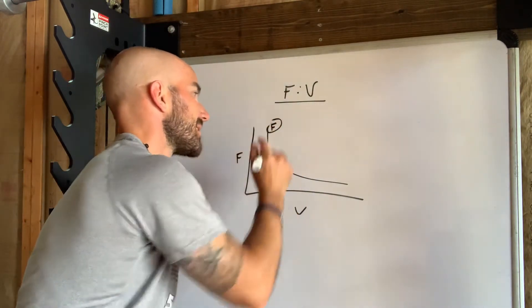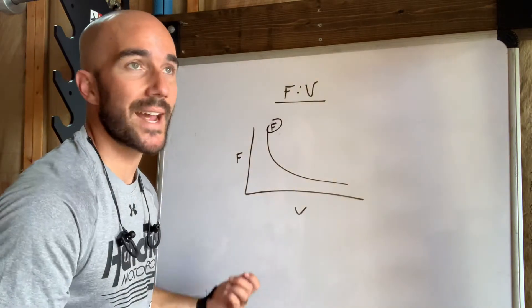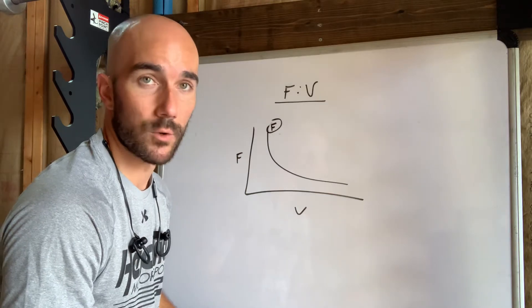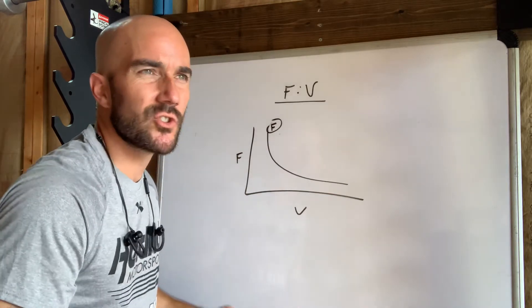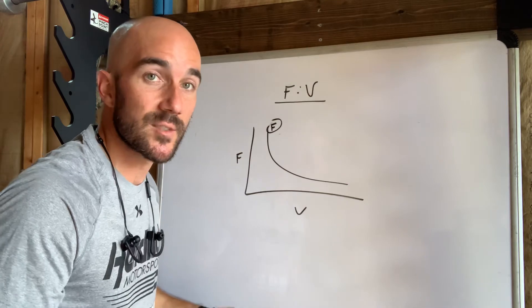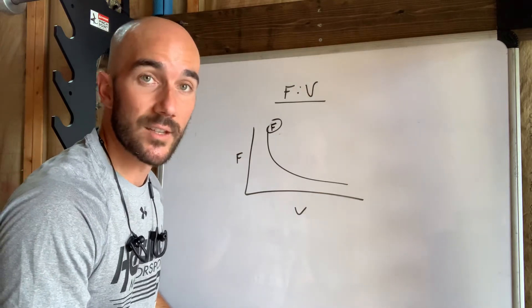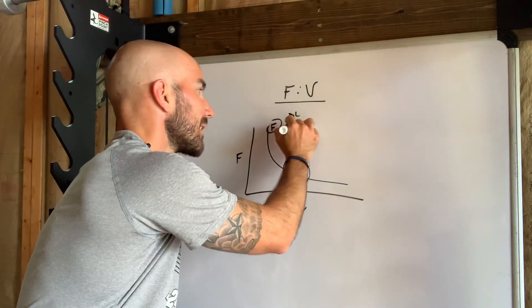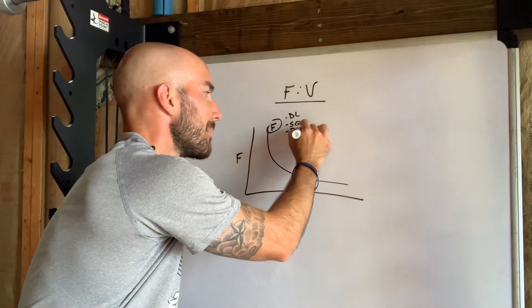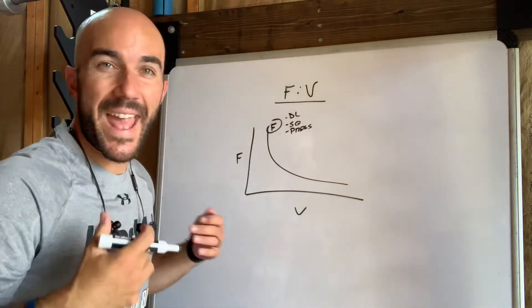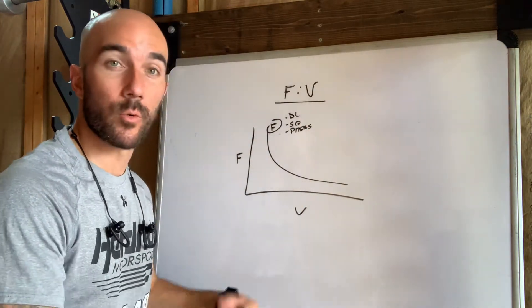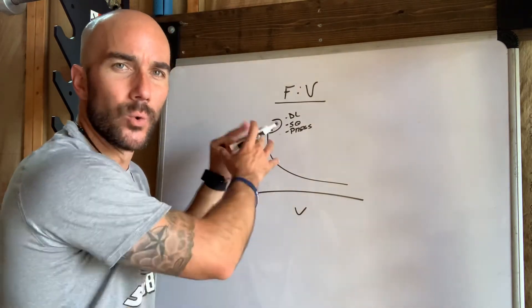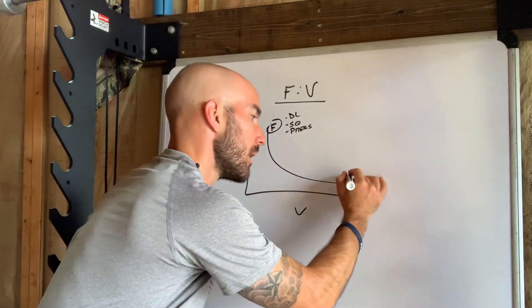Something that exists on this side of the curve here could be an exercise that we're really trying to create as much force as possible. Not super interested in just the speed component, although I want to really try to be intentional with moving the bar quickly. But things like deadlifts, like squats, like presses may exist here. Heavier weight, I'm exerting, trying to create as much force as I can on that object. And these exercises are not the only thing, they're simply an example.